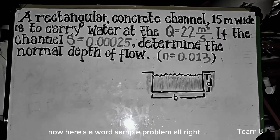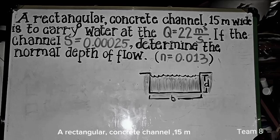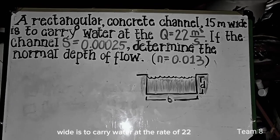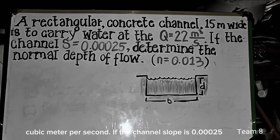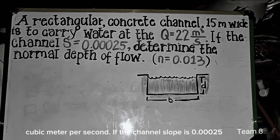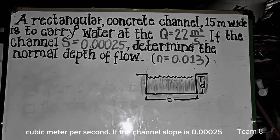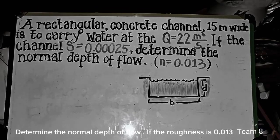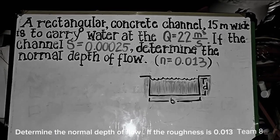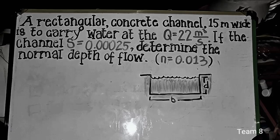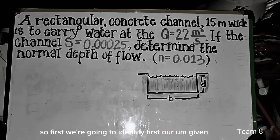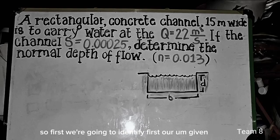Now, here is our sample problem. A rectangular concrete channel 15 meter wide is to carry water at the rate of 22 cubic meter per second. If the channel slope is 0.00025, determine the normal depth of flow if the roughness is 0.013. So first, we are going to identify our given.